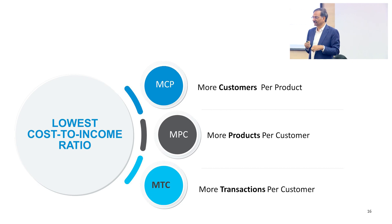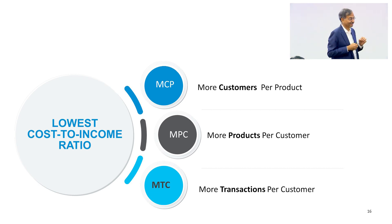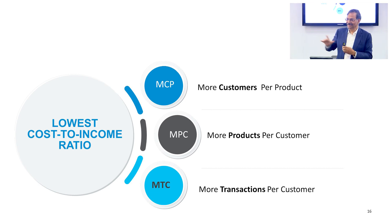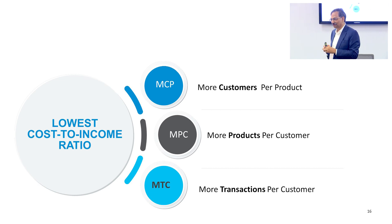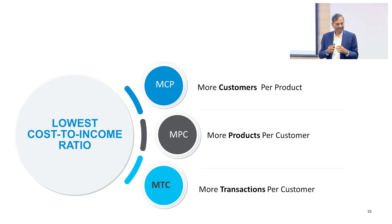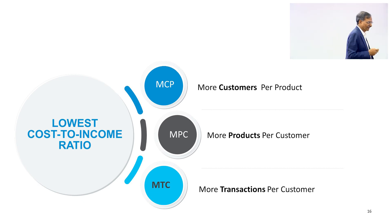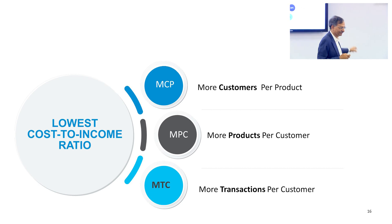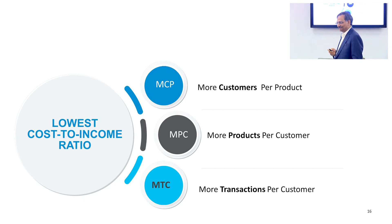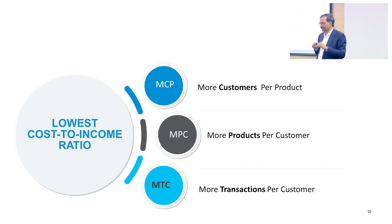Once I sell the product, I want more transactions per product. Do you need anything more than this? And this I have to do on a low cost-to-income ratio, which is my operational efficiency. So this is the desirability of any bank management. All the management decisions in the management committee will be talking only about these four things. There are four things the end customer is looking at and four things the bank is looking at.